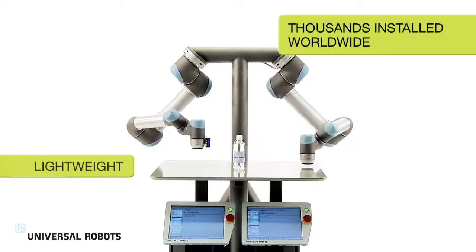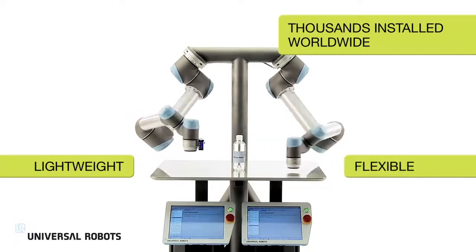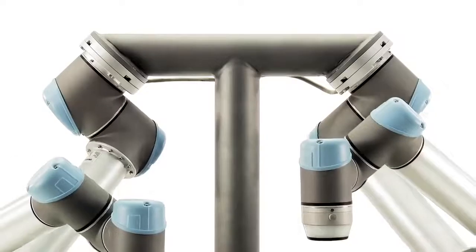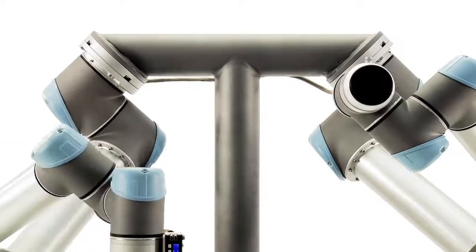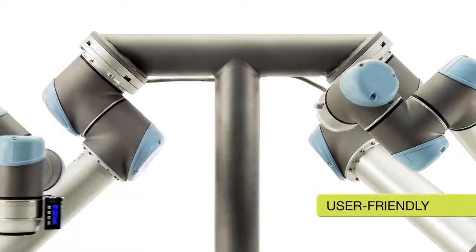Universal Robots has reinvented industrial robotics with lightweight, flexible robot arms. Tasks previously thought impossible to automate due to cost and complexity are now achievable with these user-friendly robots.